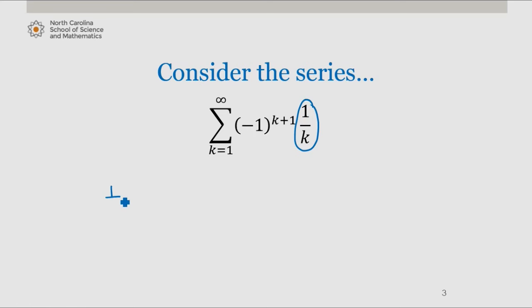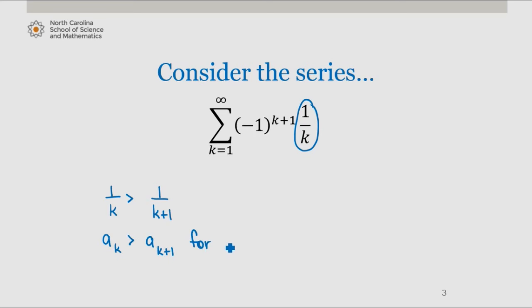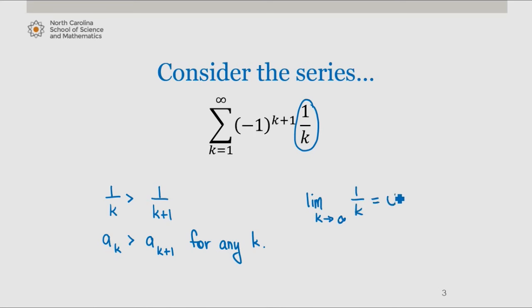We note that 1 over k is greater than 1 over k plus 1, which tells us that a sub k is greater than a sub k plus 1 for any k. So the terms are decreasing, which satisfies the first condition of the test. We also know that the limit as k approaches infinity of 1 over k is equal to 0, which satisfies the second condition. So the alternating harmonic series converges by the alternating series test.